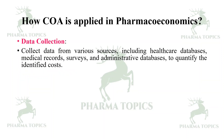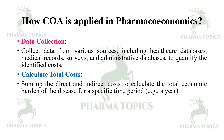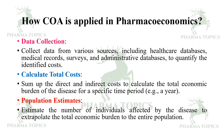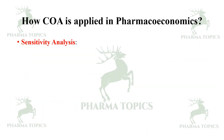Data collection: collect data from various sources including healthcare databases, medical records, surveys, and administrative databases to quantify the identified costs. Then calculate the total costs — sum the direct and indirect costs to calculate the total economic burden of the disease for a specific time period, for example one year. Then population estimates — estimate the number of individuals affected by the disease to extrapolate the total economic burden to the entire population.